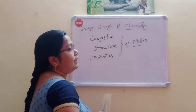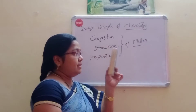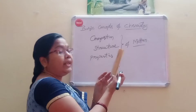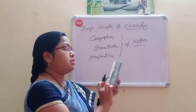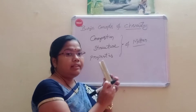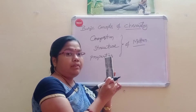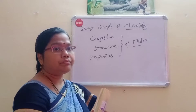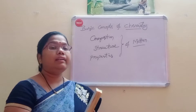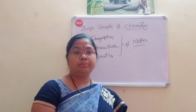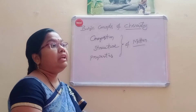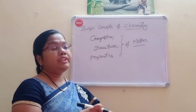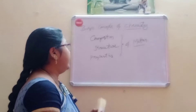Structure of matter. Matter is made up of microscopic units called atoms. An atom has a positively charged nucleus and negatively charged electron shells.